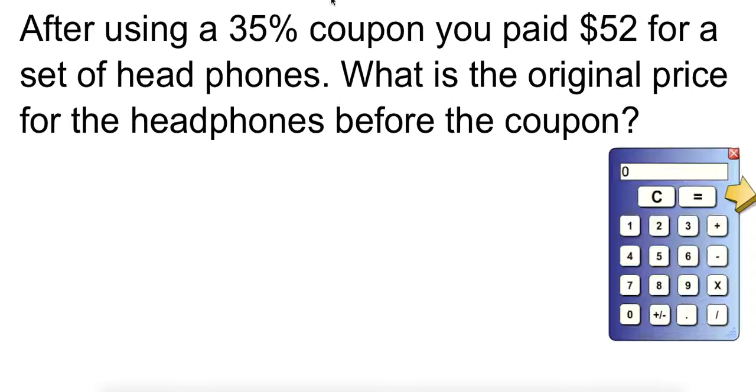So what we're going to need to do here is identify our key information. After using a 35% coupon, we paid $52, and we're looking for the original price. What this means is we don't know what 100% is. That's actually what we're looking for. So we want to know what the original price was before this coupon.